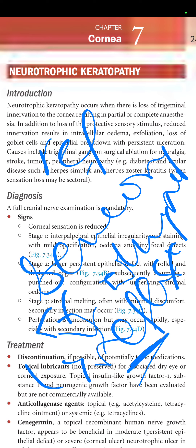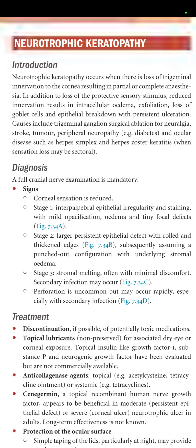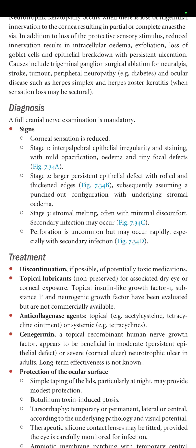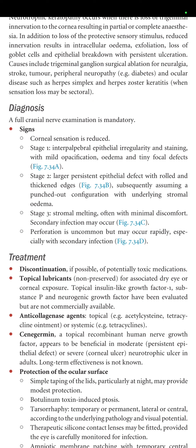In addition to loss of protective sensory stimulus, reduced innervation results in intracellular edema, exfoliation, loss of goblet cells, and epithelial breakdown with persistent ulceration. Causes include trigeminal ganglion surgical ablation for neuralgia, stroke, tumor, peripheral neuropathy such as diabetes, and ocular diseases such as herpes simplex and herpes zoster keratitis where sensation loss may be sectoral. A full cranial nerve examination is mandatory, and the key sign is reduced corneal sensitivity.